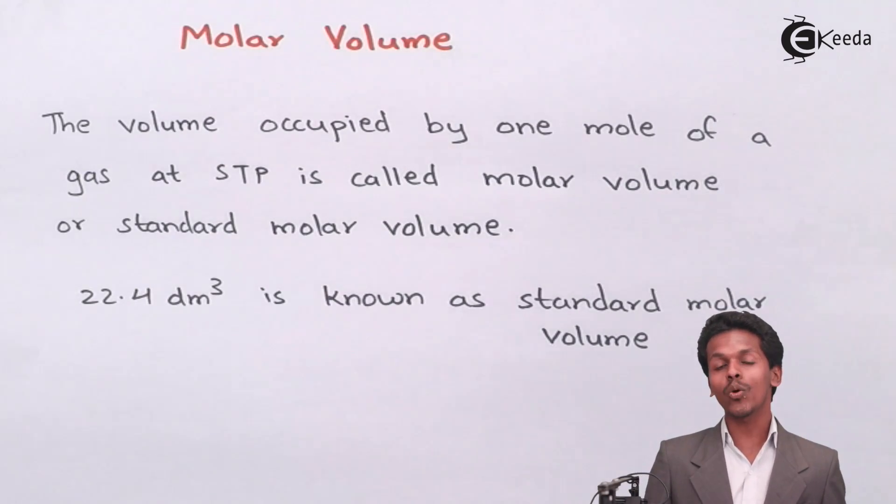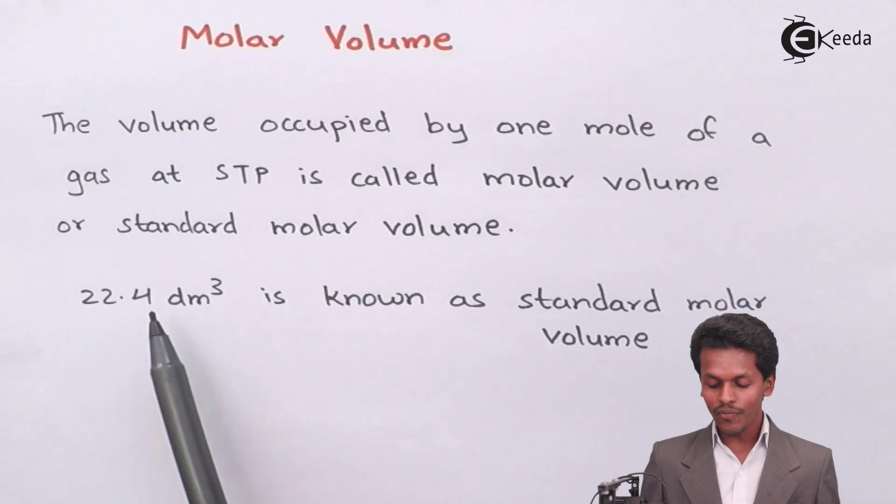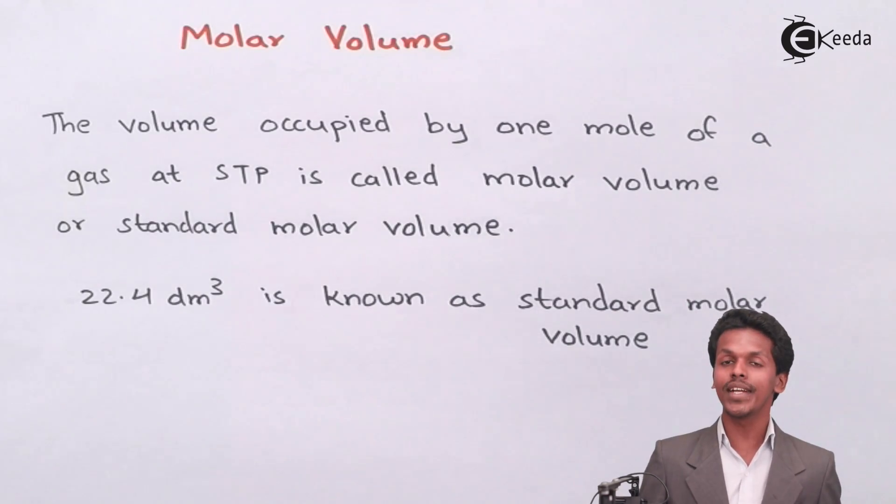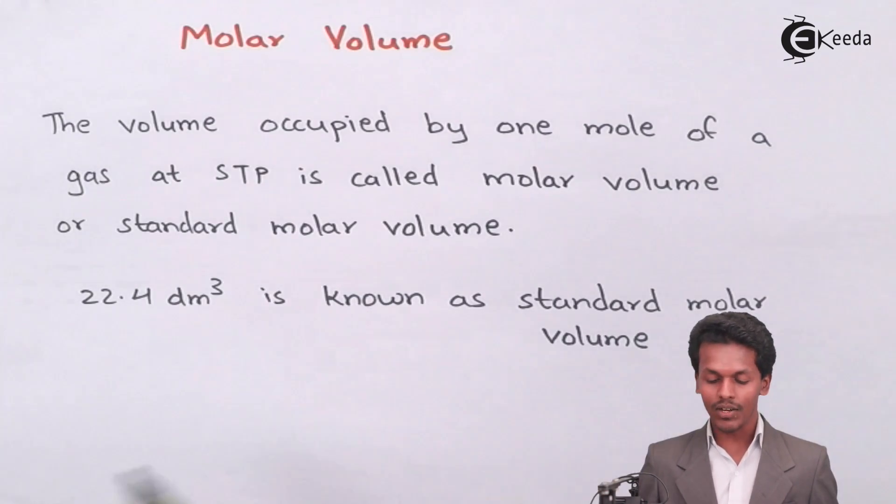So it has been calculated that 22.4 dm³, that is 22.4 liter of the gas which is occupying a volume of 22.4 liter, is known as standard molar volume.